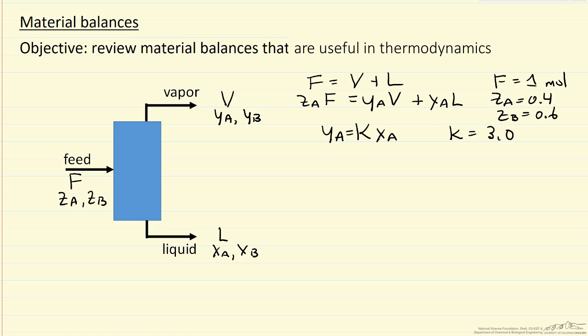Now the other equations we're going to use are XA plus XB must equal 1, YA plus YB equals 1, and so in order to solve this, we have, in this case, five equations. Let's list our unknowns: XA, XB, YA, YB, V, and L.